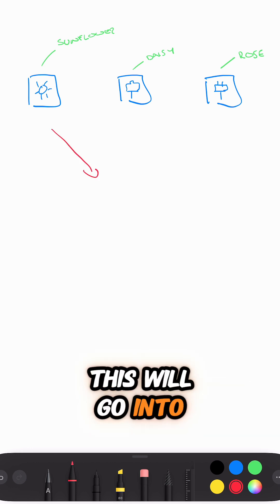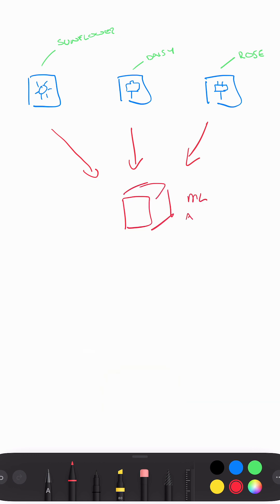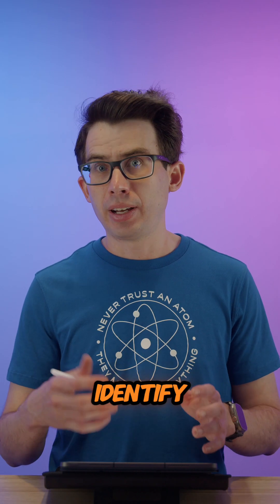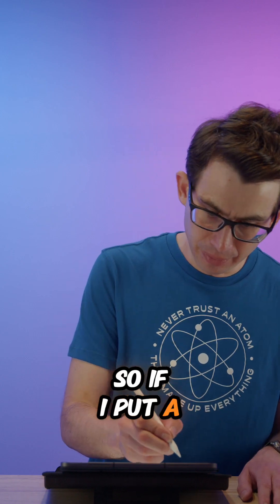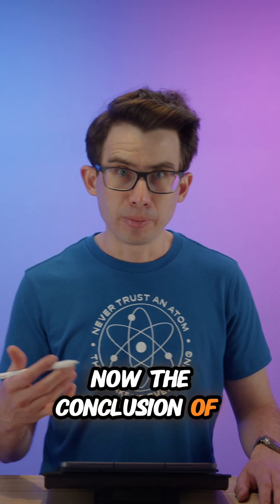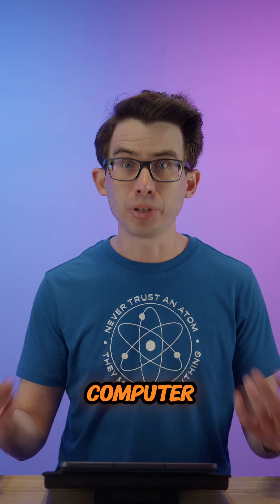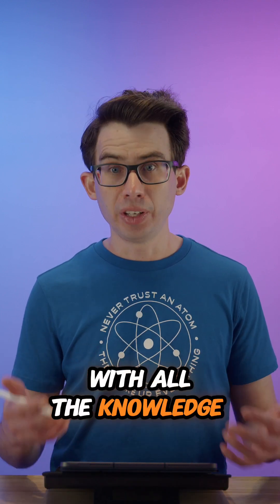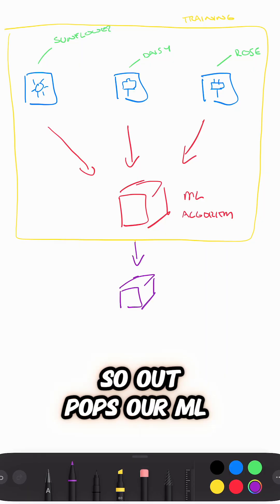We feed this labelled data into a machine learning algorithm. The algorithm will learn to identify the different types of flowers. This whole process is the training phase. At the conclusion of the machine learning training process, the algorithm outputs a machine learning model — essentially a computer program with all the knowledge and learnings from the training.